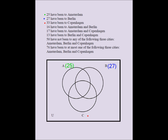33 have been to Copenhagen, so we put 33 here as the sum of those four regions. Now, this is a challenging problem. 16 have been to Amsterdam and Berlin — 16 should be the sum of that football-shaped intersection, not just the center. 17 have been to Amsterdam and Copenhagen — the two areas inside that football should add up to 17. The two areas inside the Berlin-Copenhagen football should add up to 13.